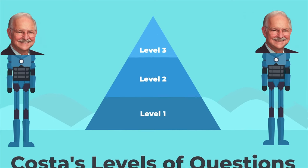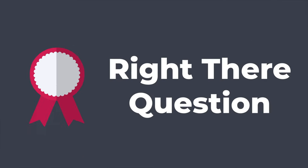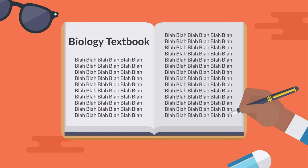There are three levels of questions, so let's start with Level 1. Level 1 questions are called Right There questions. The answer to a Level 1 question should be found right there in one spot in the book or article that you're reading.